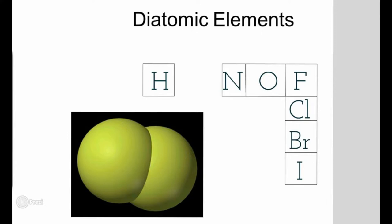Don't get them confused with noble gases. Noble gases are gases, and some of the diatomic elements are also gases. My advice: if you're trying to figure out those seven, cover up the noble gases and you'll see the little pattern — H, N, O, F, Cl, Br, I. How I memorized it? I came up with my own little word: HANOFF-KLI-BRI. That was easier to memorize for me.